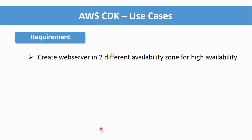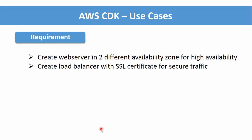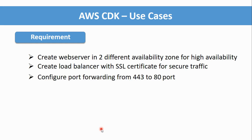Now for a real-world requirement: we need to create two web servers in different availability zones for high availability, a load balancer with an SSL certificate for secure traffic, and configure port forwarding from the load balancer so traffic routes from HTTPS to HTTP port 80 on the target servers — since we are not installing an SSL certificate on the target servers.